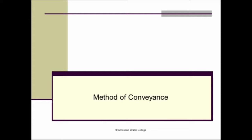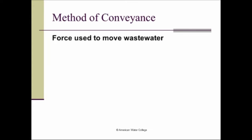Now we're going to talk about the method of conveying wastewater — specifically, what force is used to move the wastewater from the point of collection to the wastewater treatment plant. There are three main types: gravity, where gravity is the force that moves the water; low pressure systems, where pumps pressurize a force main to move the water; and vacuum systems. We'll briefly look at each type and the major components for each.